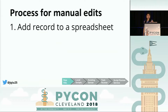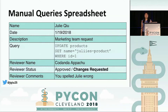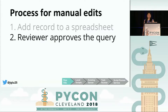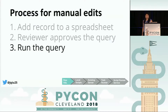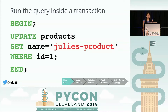Here's what this checklist looks like. The first step is to add a record to the spreadsheet with your name, the date, a description of the query, the query itself, and a reviewer. The reviewer then looks at the query, requests changes or approves it, and after a couple of back and forths, approves the query. Once you've gotten those two thumbs up, the last step is to run the query — and we ask everyone to run their manual edits inside a transaction, so if they realize they made a mistake halfway through, it's easy to roll back.